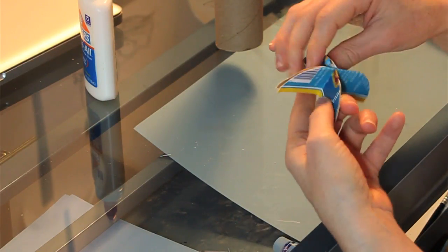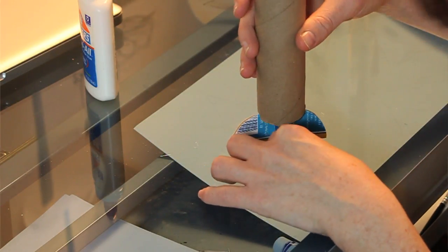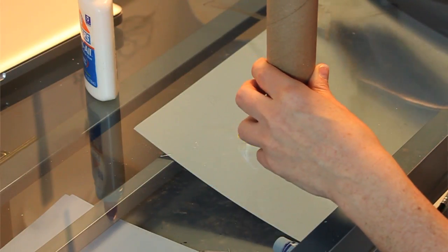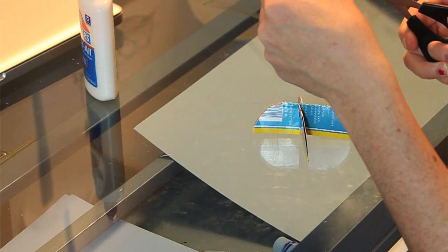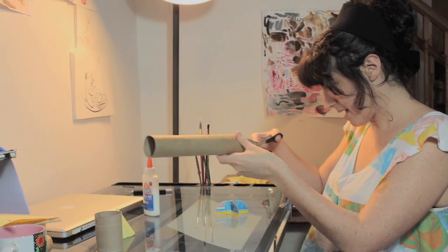Now what we're going to do is find places where we want those to meet on our cylinder, and then we're going to cut pieces into that as well.